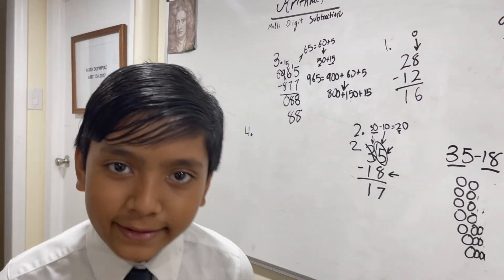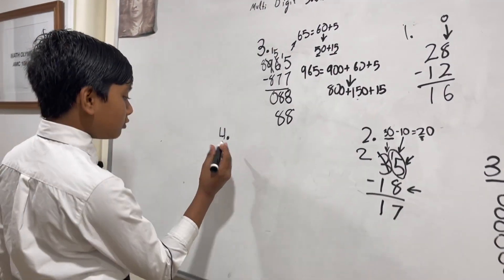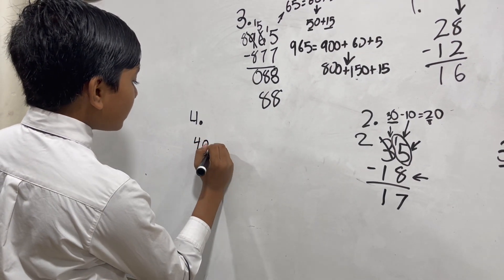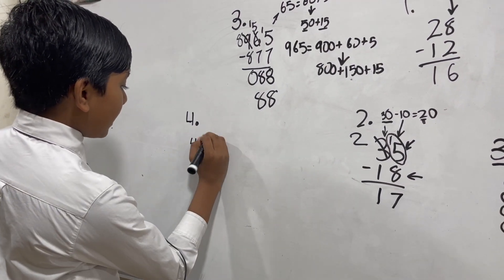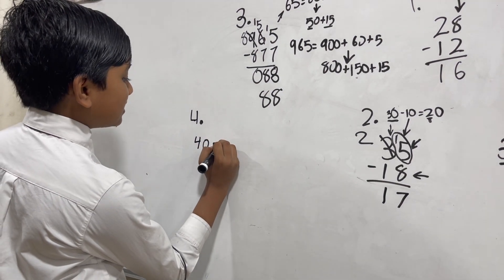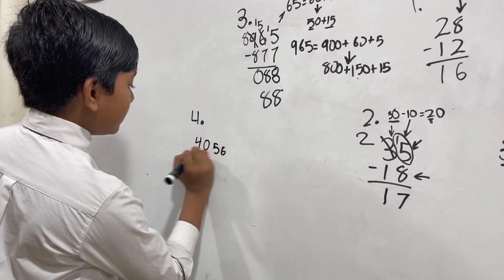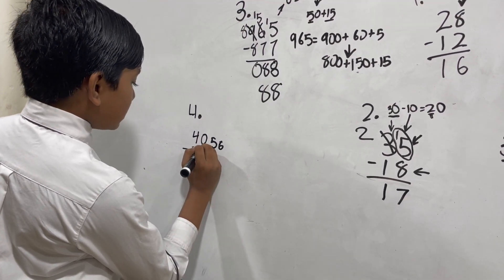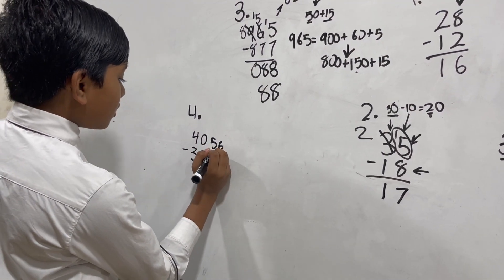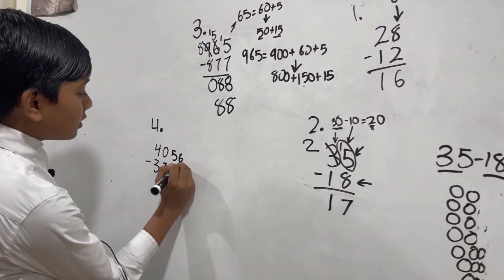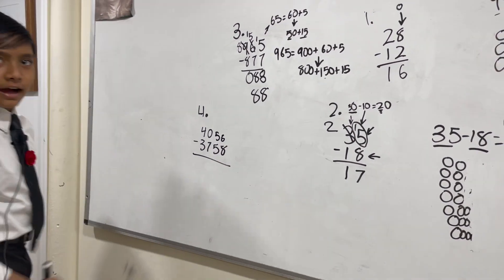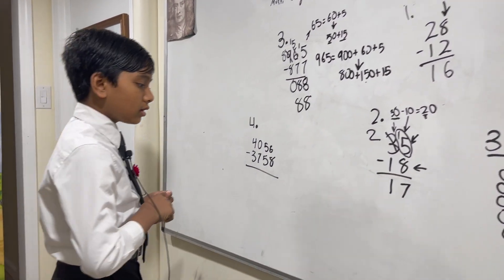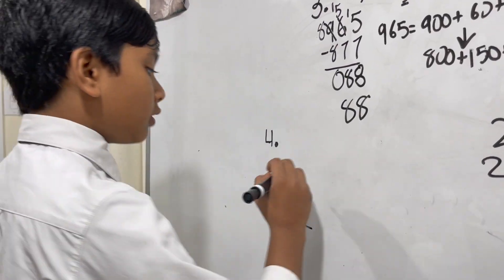Now let's do one more example. This example is going to use some tricky tricks. Let's say we have 4,056 minus 3,358.